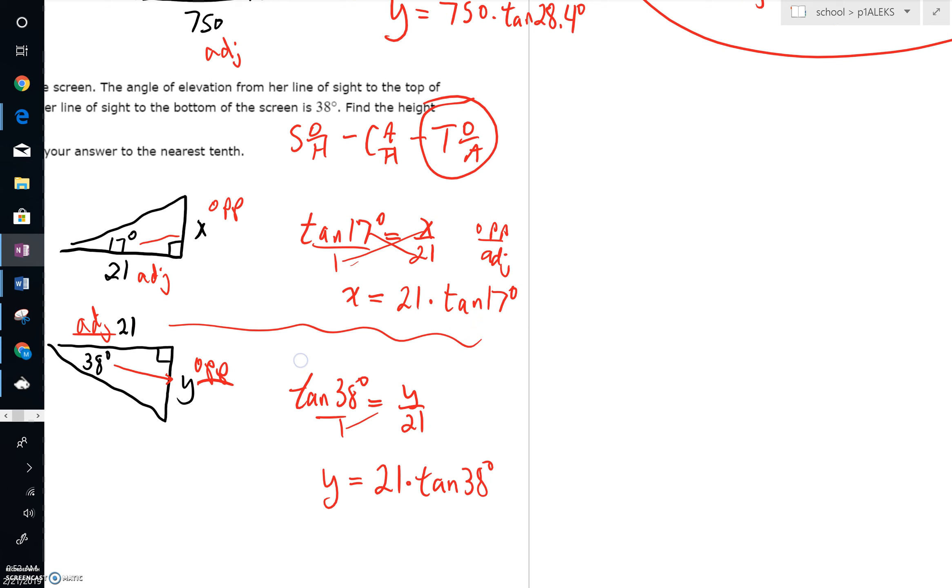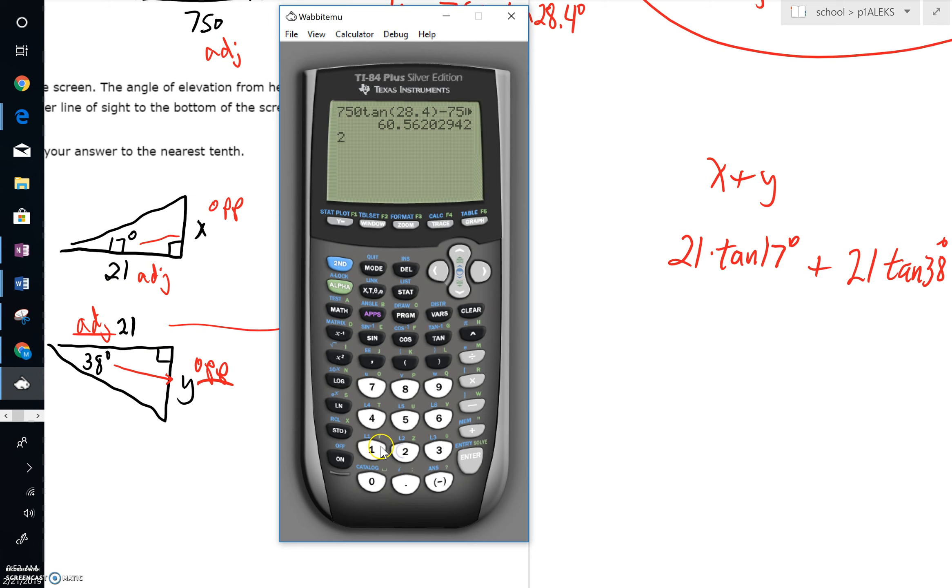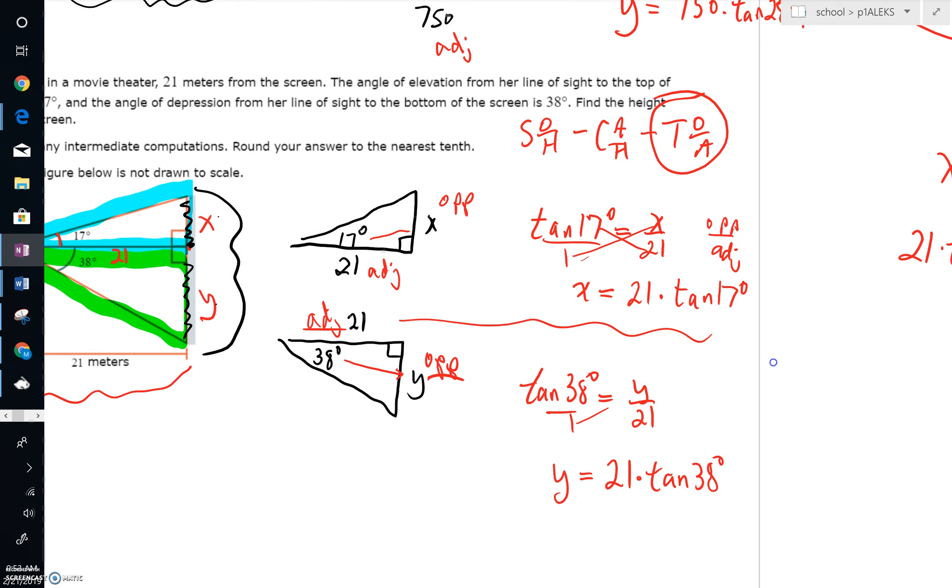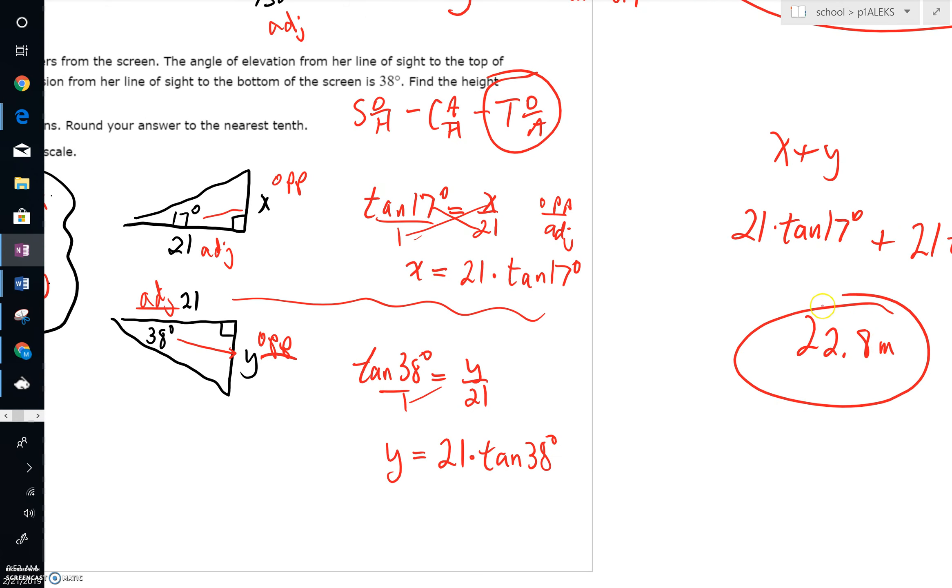To finish this off, we're going to take X plus Y. We've got a part of the screen and another part of the screen. And again, notice, once again, I'm not rounding this off. I'm just putting it all together. So let's see where we're going with this. This is 21 tangent of 17. Close your parentheses. 21 tangent of 38. And rounding to one decimal, the nearest tenth, we'd get 22.8. So that's 22.8 meters. That's your total length.